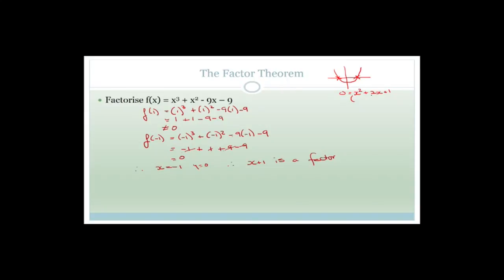Remember, if you factorize something like (x+1)(x+1), you'd say each bracket is a factor because when multiplied they form the expression. When we get back x = -1, we go 0 = x + 1, therefore x = -1. Here we're doing it backwards - we're saying x = -1, therefore x + 1 is a factor.